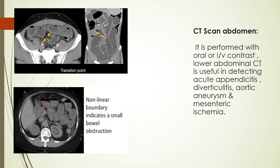If we get a CT scan done, it is performed with the help of oral or IV contrast. As we can see in the picture, the loops of the bowel are dilated, and we can also see a transition point where the diameter of the bowel changes, indicating any kind of obstruction. Here we can see a non-linear boundary which indicates a small bowel obstruction, unlike the air-fluid levels where there was a linear boundary.